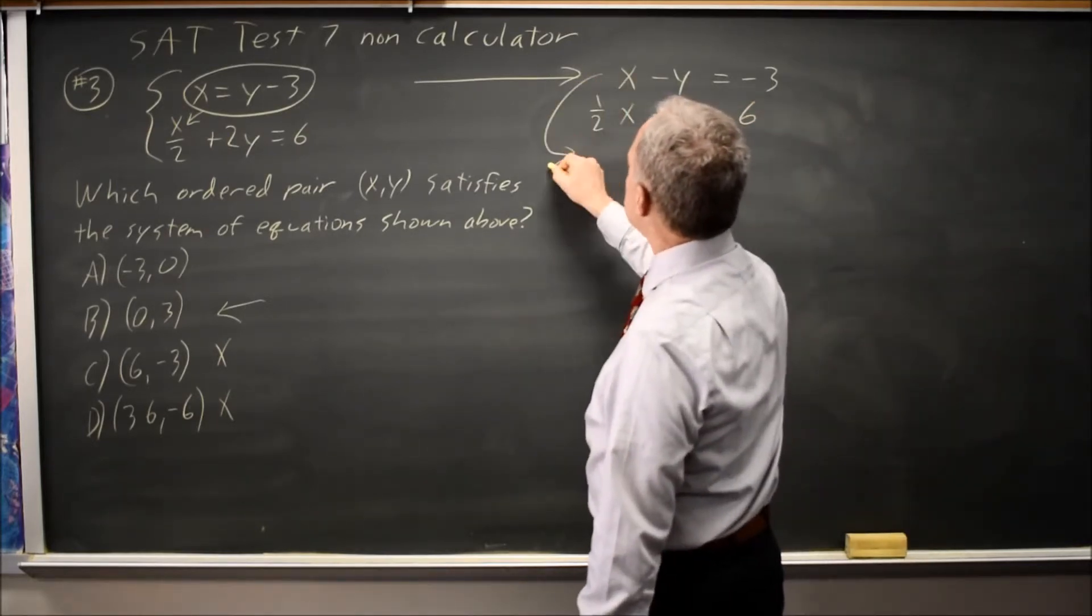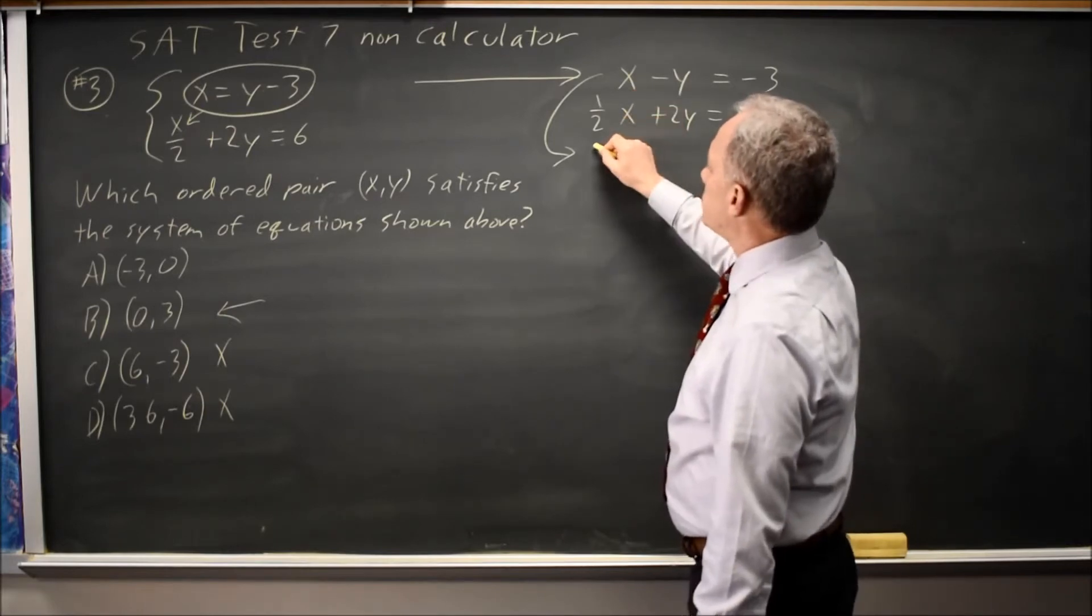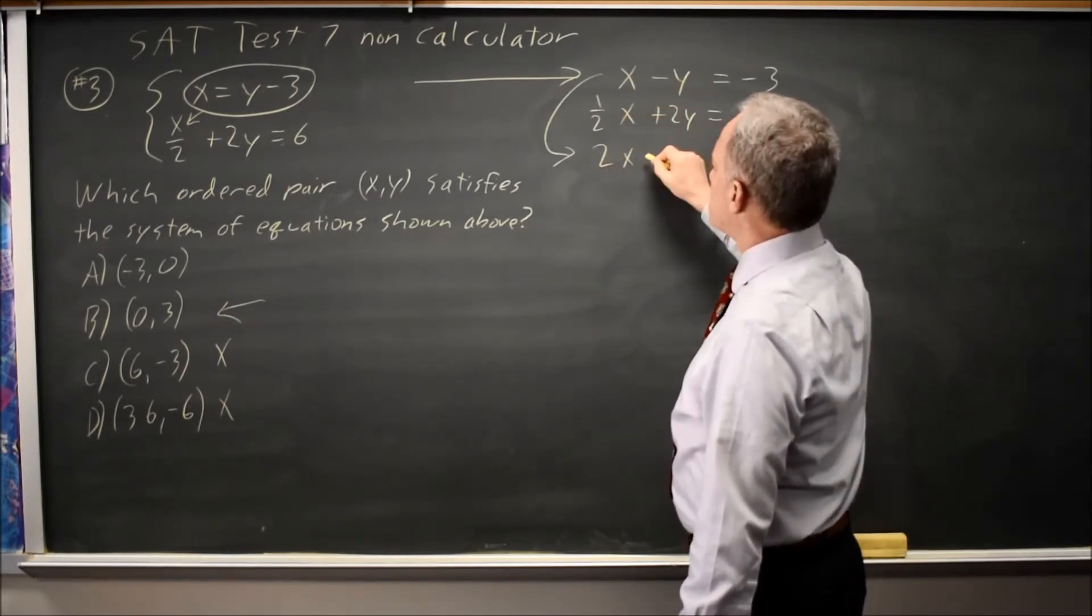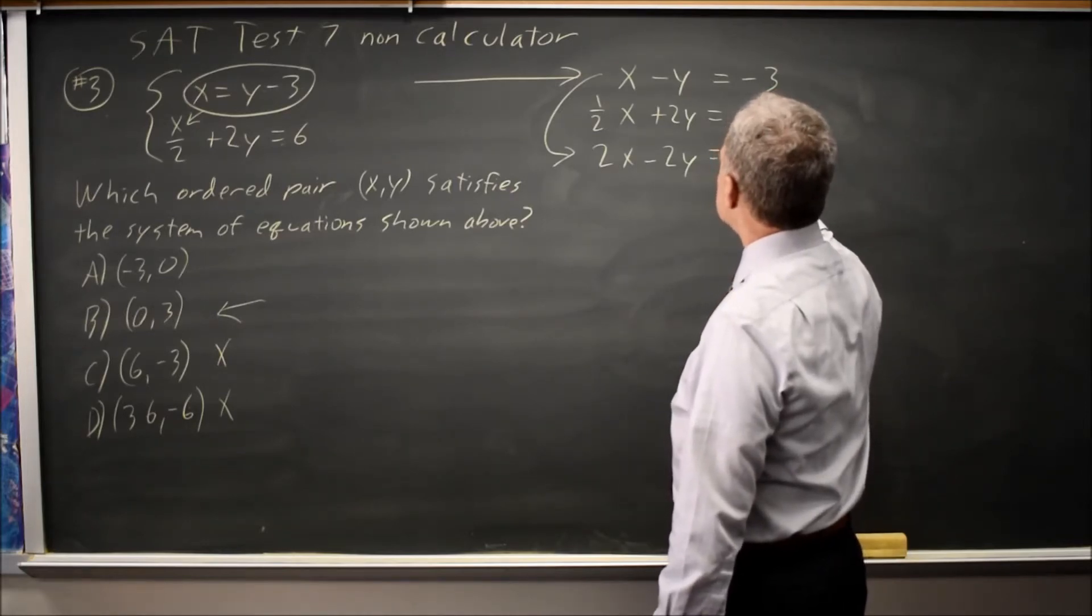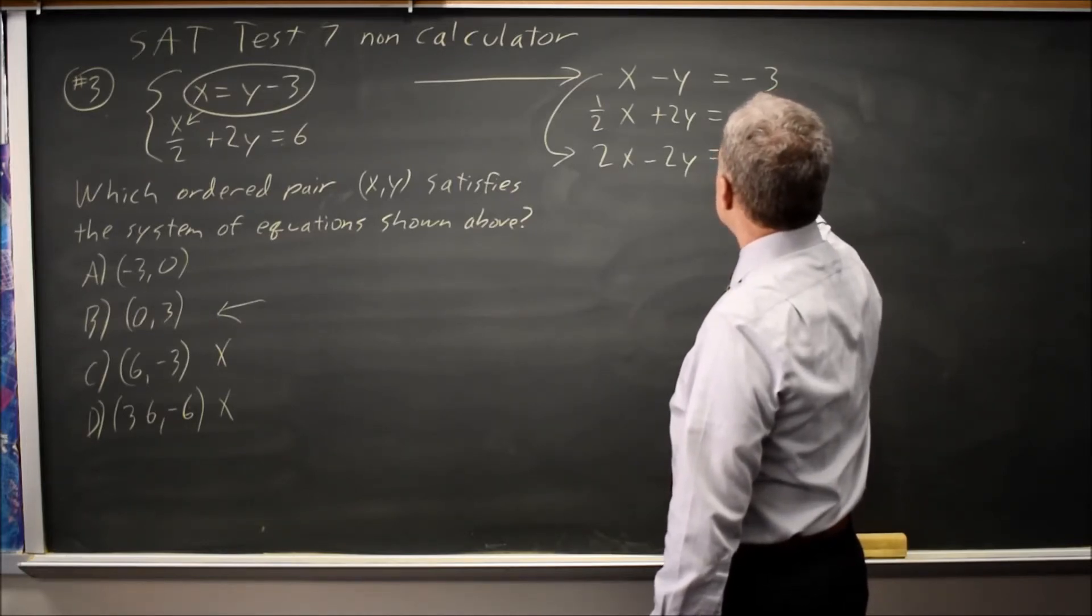Let's multiply this first equation through by 2. So 2 times x is 2x, 2 times negative y is negative 2y, 2 times negative 3 is negative 6.